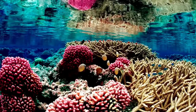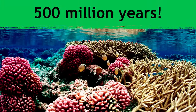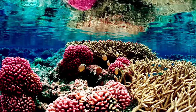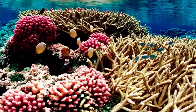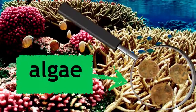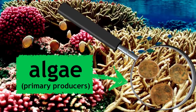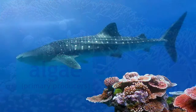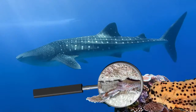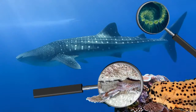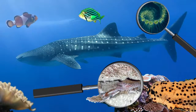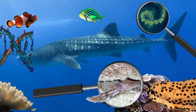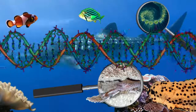Coral reefs are an excellent example of a diverse ecosystem that has existed for as many as 500 million years. The coral actually has a symbiotic relationship with tiny algae, which are the producers in the ecosystem. From whale sharks to pistol shrimp, from sea cucumbers to phytoplankton, this ecosystem is teeming with more organisms and interactions than there are bases in a tiny little clownfish's DNA.